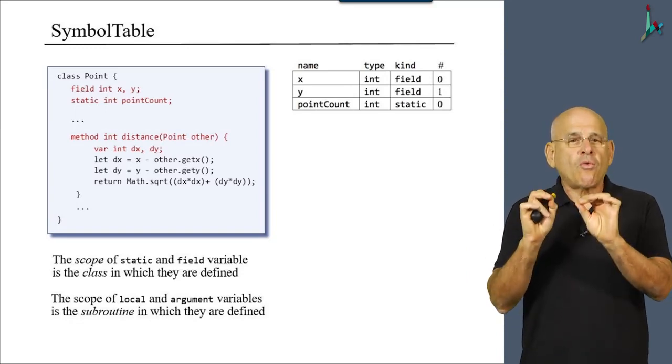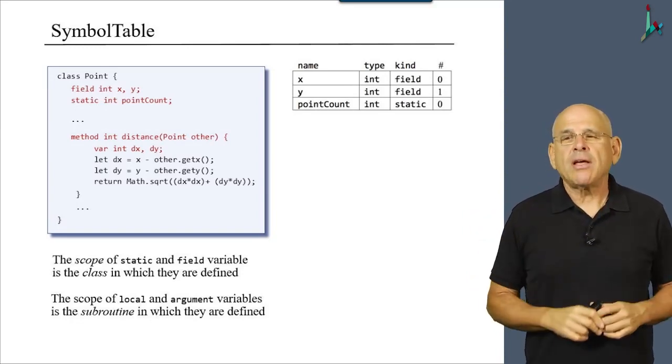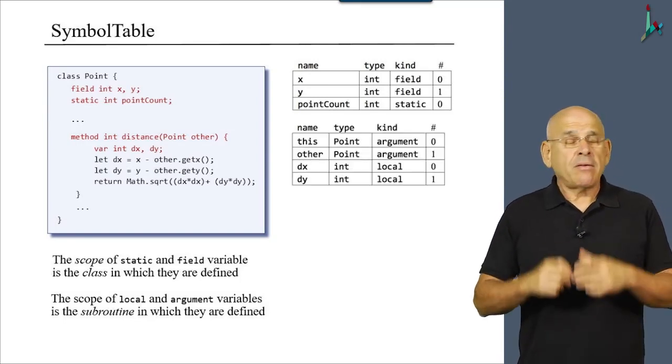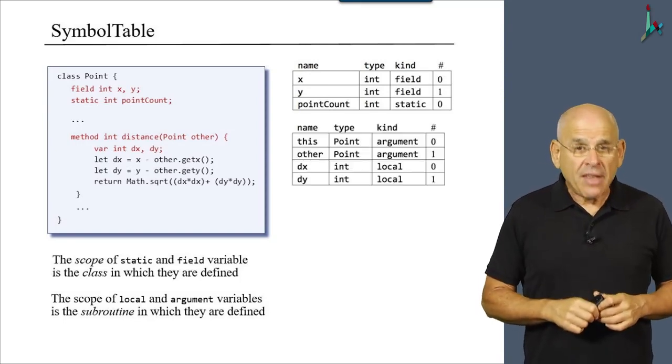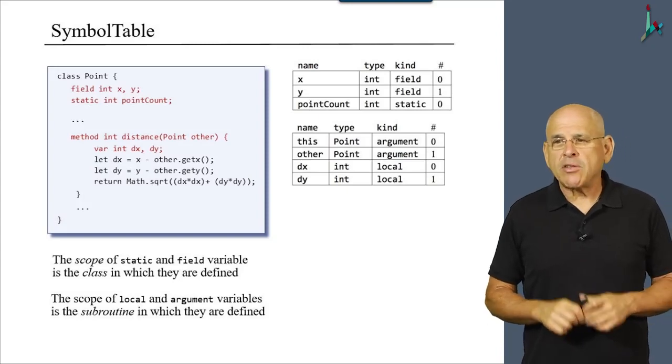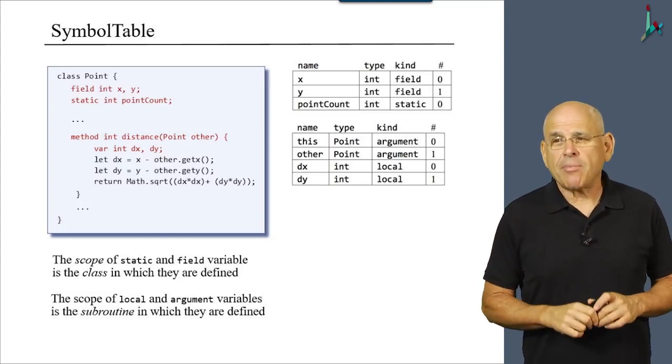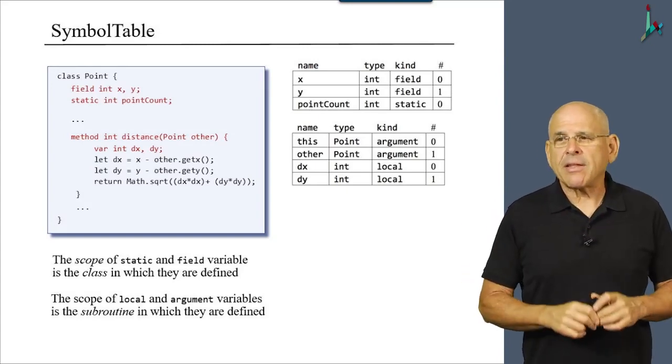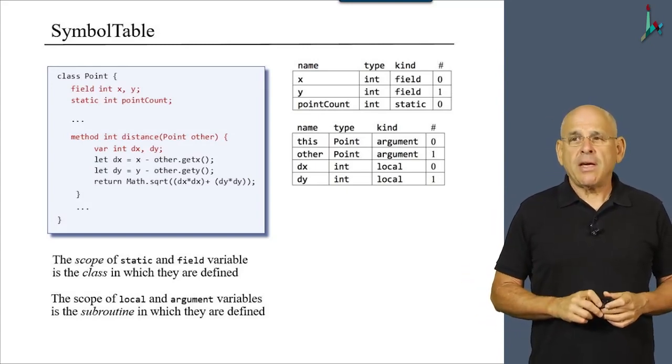Now, these variables are not recognized, are unknown, outside this subroutine. The compiler is going to keep track of these kinds of variables using another symbol table, which is a subroutine level table, as you see here in this example.